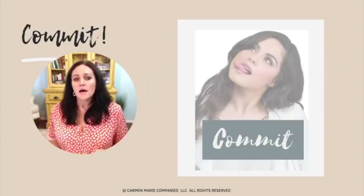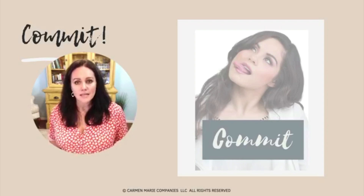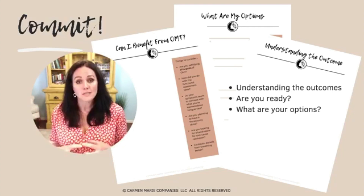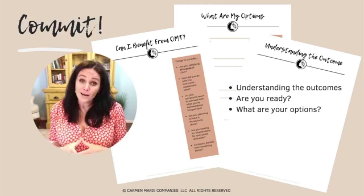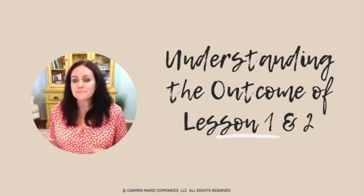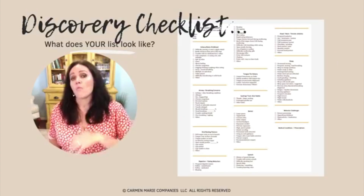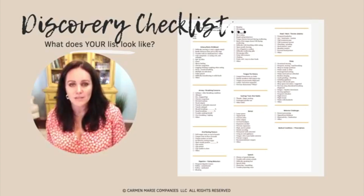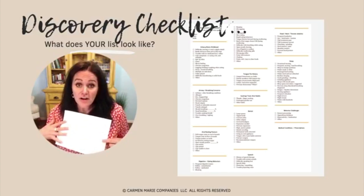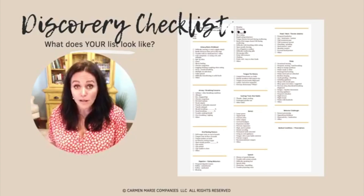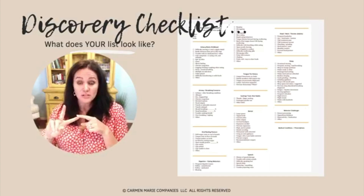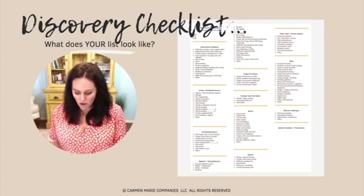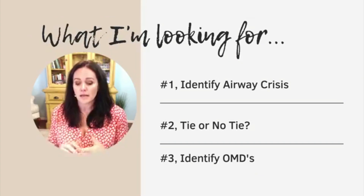So the first step is clarity, the second step is commit — just figuring out: can I do this, do I want to do it, am I ready? Tonight I'm going to help you understand your outcomes and what your options are. First, let's understand the outcome from lessons one and two. Think about your discovery checklist. If it looks like a kindergartner got a hold of it with a crayon, you've got a concern. If it's blank, either you didn't do it completely or you don't have concerns — and if you're here, it's probably not blank.